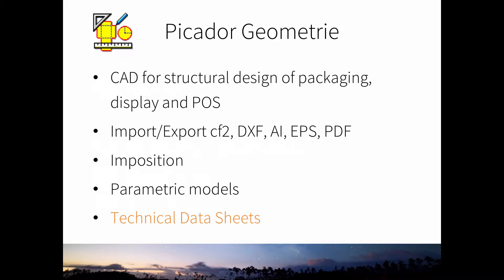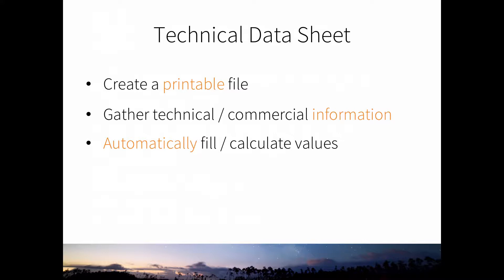The technical data sheet will allow you to create a printable file of a certain size — for example an A4 file or a letter sized file — that you can easily print and put in a folder or attach to a certain order. It can contain technical and commercial information about your product, such as the customer, order number, and packaging name. Besides that, it can automatically fill in and calculate certain values about the packaging, like the length of all cutting lines or the height and width of the drawing.